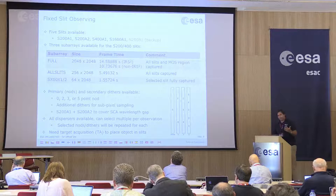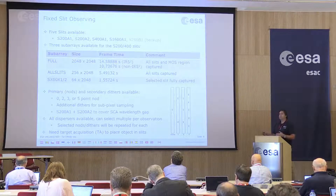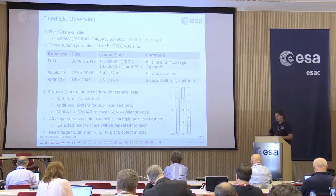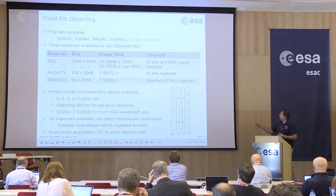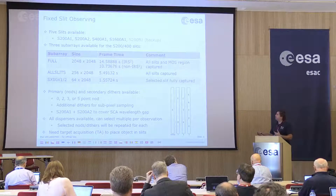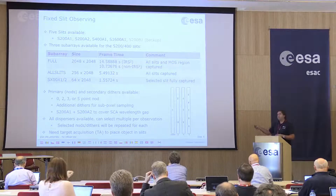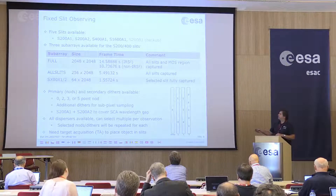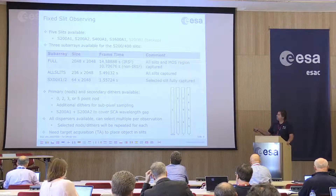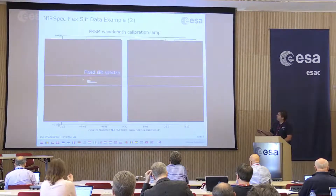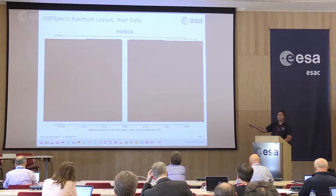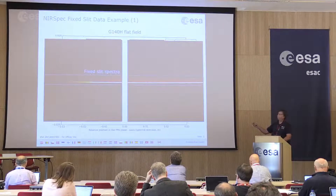As for ground-based fixed-slit observing, you have a range of available nod and dither patterns. You can do either no nod, or a 2, 3, or 5-point nod along the slit to do a one-to-one subtraction and get rid of the background for compact sources. There are additional dithers around those nods for sub-pixel sampling. You also have the option to choose both 200 arcsecond slits on the left-hand side — the distance between those slits is designed so that you recover the wavelength gap when taking high-resolution spectra in both slits.